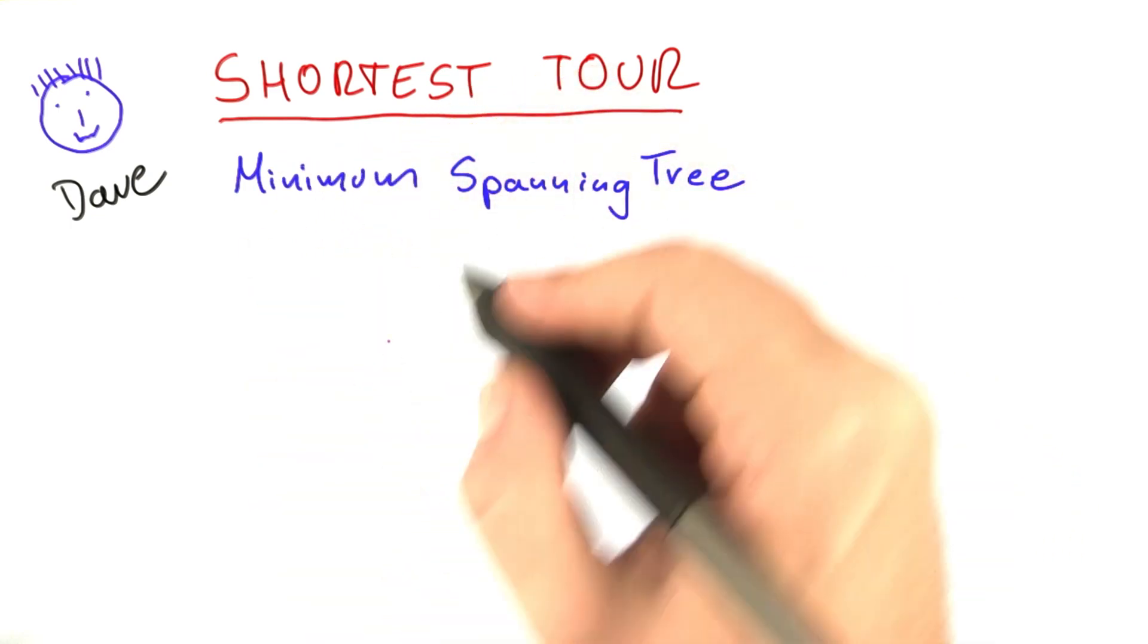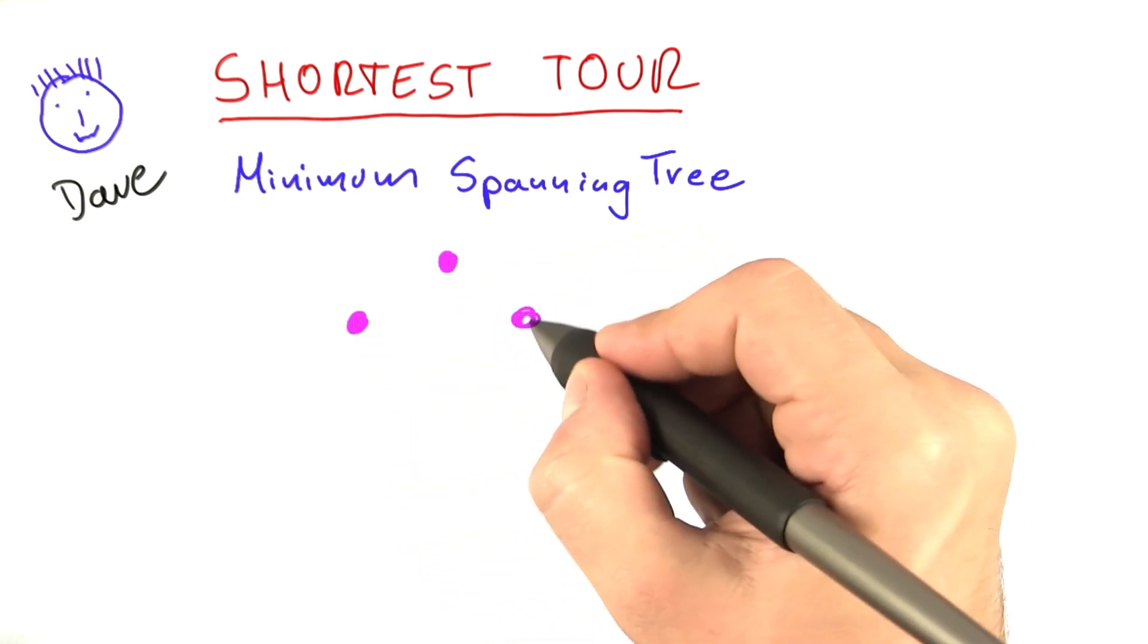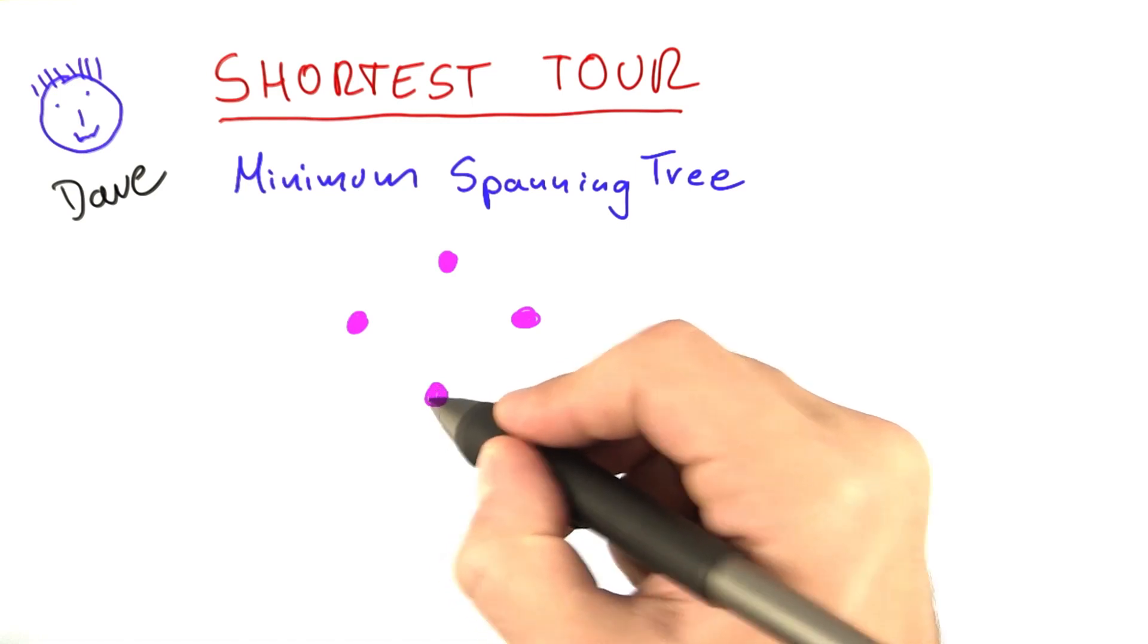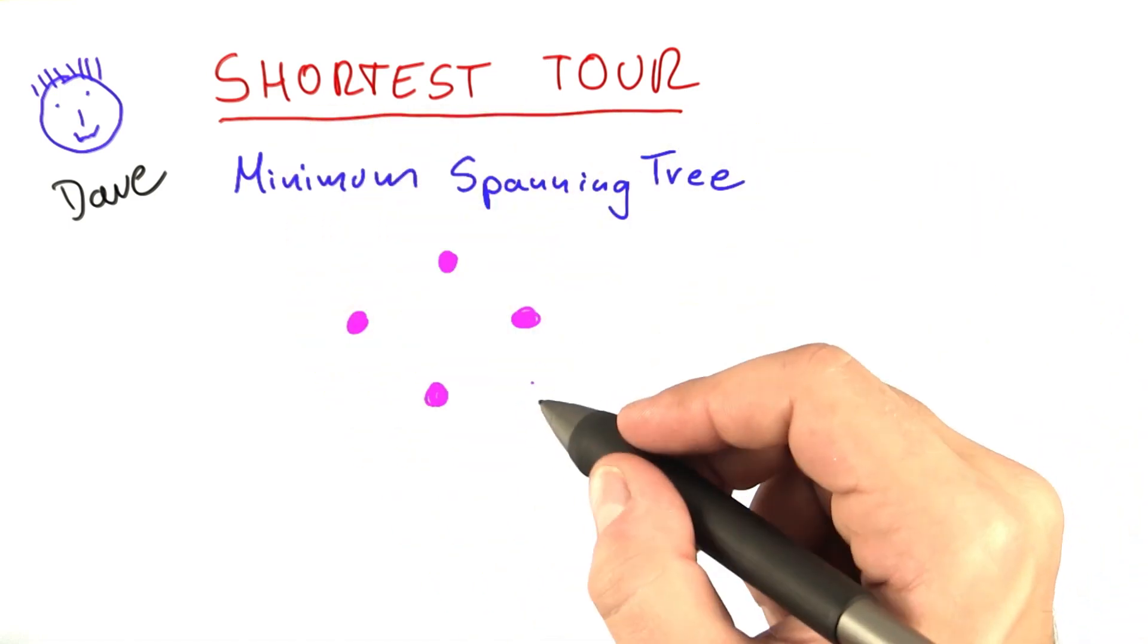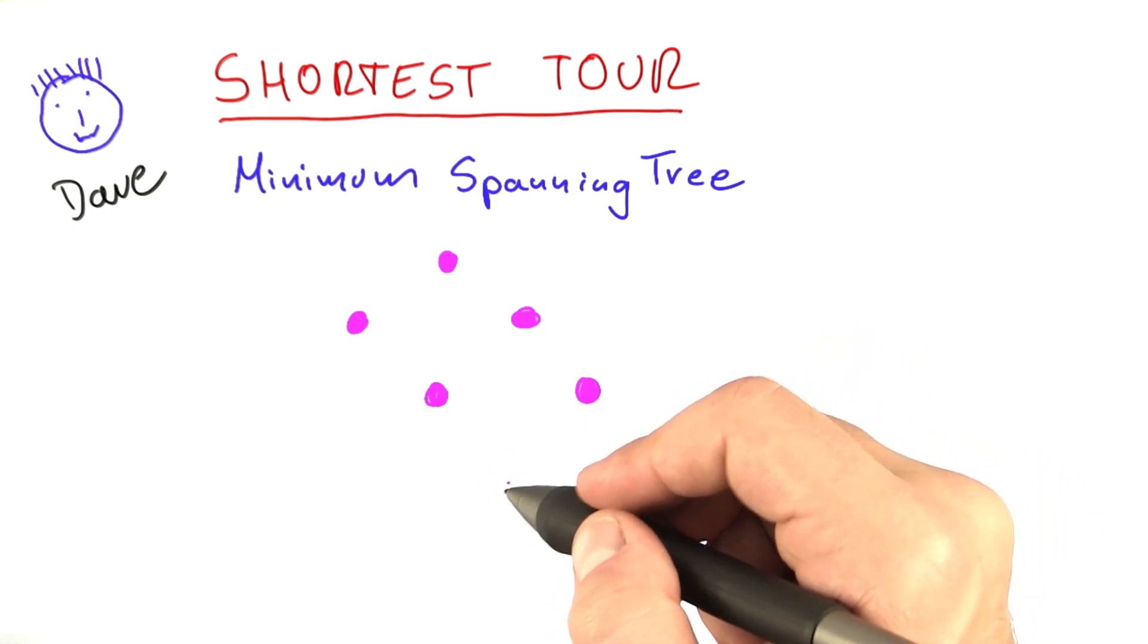A minimum spanning tree is still a spanning tree on a graph, and in order to find a minimum spanning tree, you actually need to have a special kind of graph, and that is one that looks just like the input for shortest tour, and what I mean by that is that all of the edges have a certain number assigned to them.